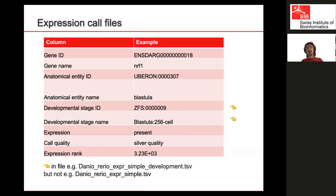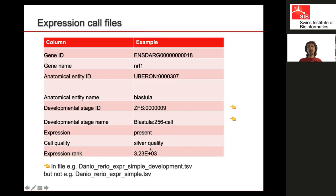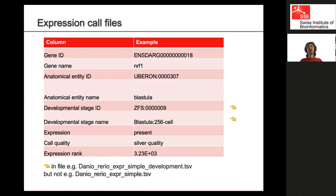We provide simple files and advanced files. The simple file is indeed quite simple: you have a gene ID, its name, the anatomy, the development, and whether the gene is called present or absent, with what quality, and the rank score Frédéric just presented. There are actually two versions: one with developmental stage columns, and one without — just gene and anatomical structure. So you can have a file that just says for every combination of gene and anatomical structure, is the gene present or not, and what is the rank. Very simple.